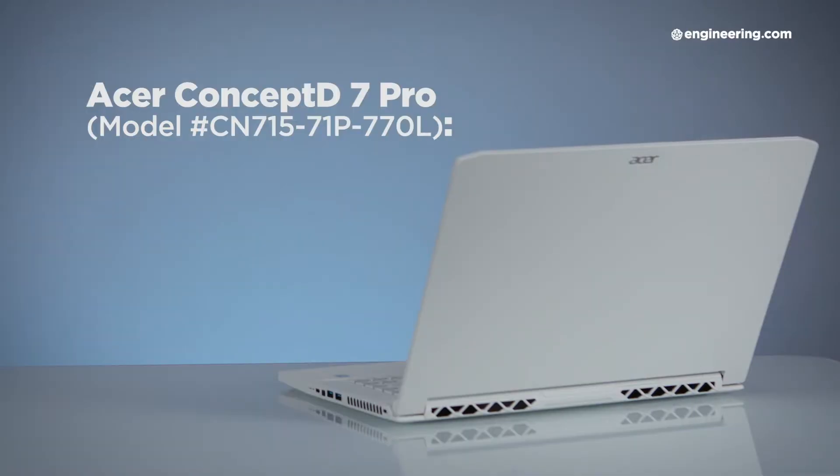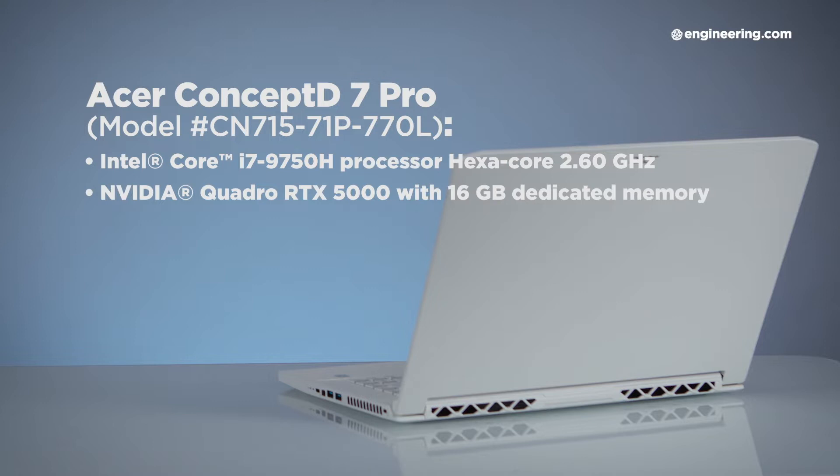Acer ConceptD 7 Pro comes with an Intel Core i7-9750H CPU that's got 6 cores, a base clock speed of 2.6 GHz. The graphics card is great, it's the best I've seen in any mobile workstation, an NVIDIA Quadro RTX 5000, so that's the top of the line in terms of graphics.